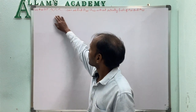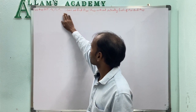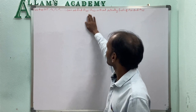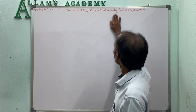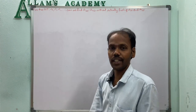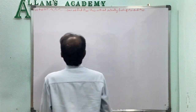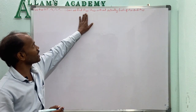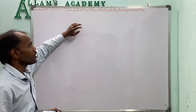Given the AP: -3, -7, -11, and so on, can we find A30 minus A20 without actually finding A30 and A20? Here the difference between the 30th term and the 20th term is asked.